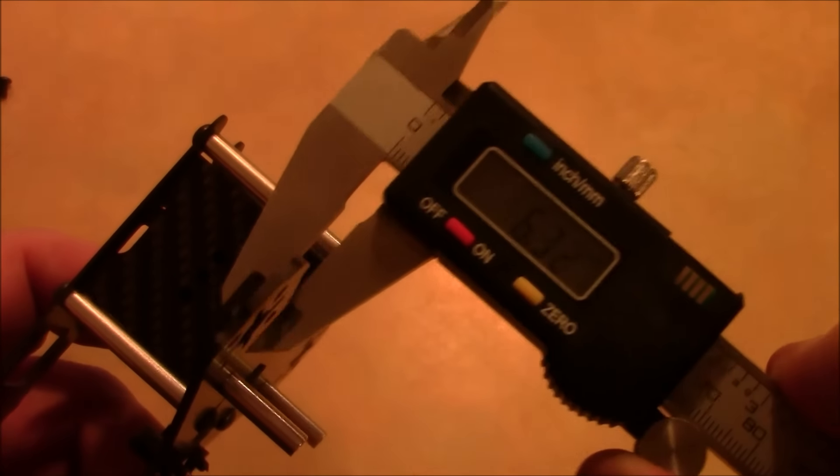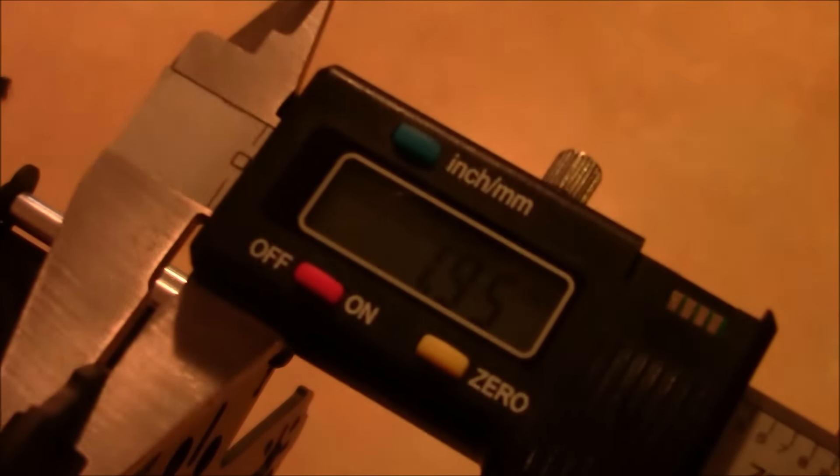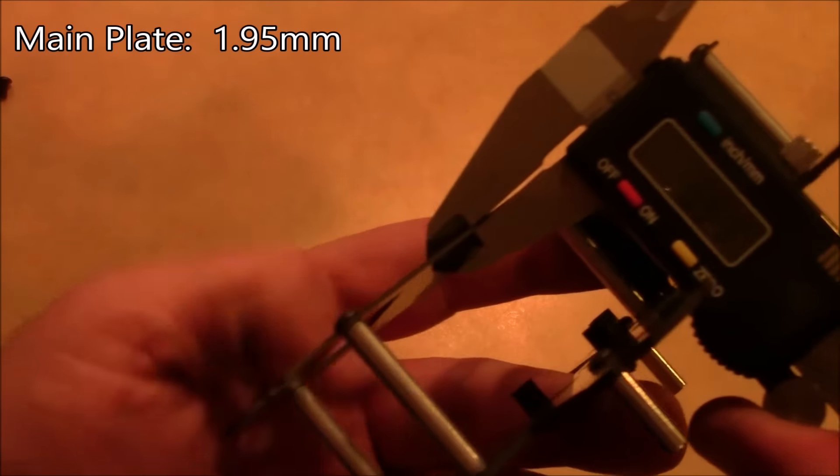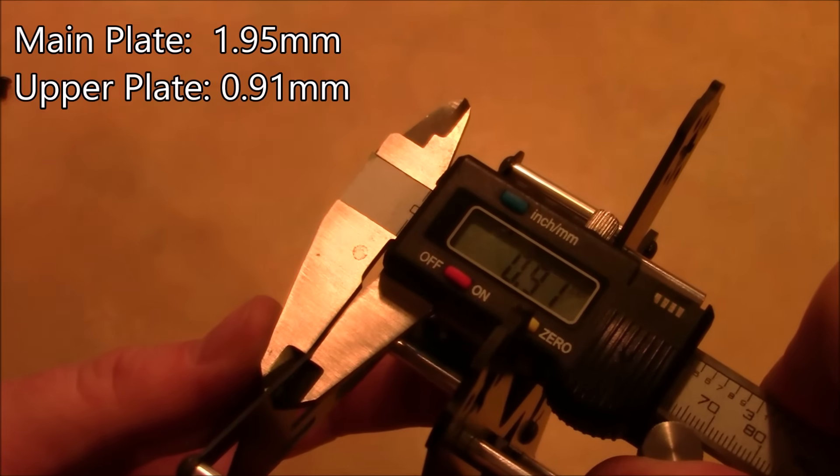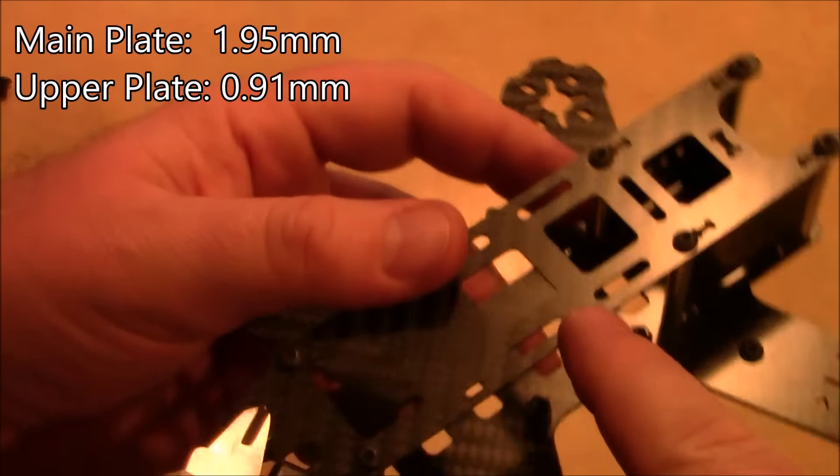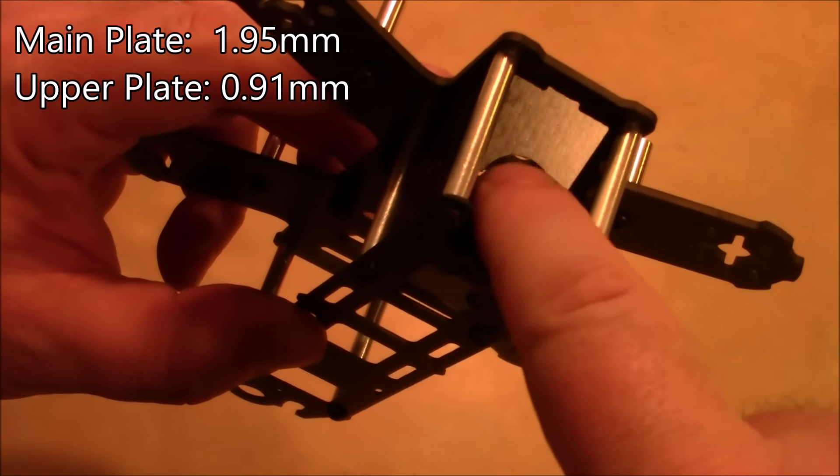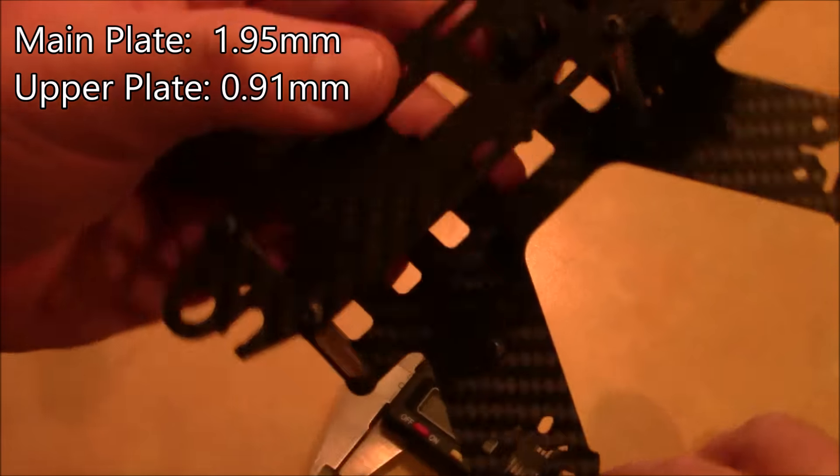I got this teared out at zero. And this comes in about 1.95. Two millimeter main plate and this upper plate looks like it's about one. Yeah, 0.91 millimeters. And this upper plate and the side plates and the camera mount here in the front are all the same thickness.